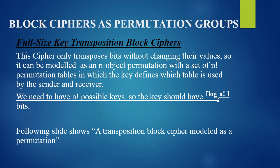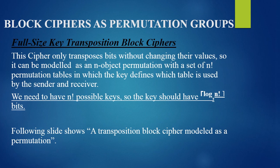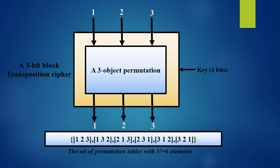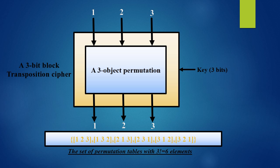The following figure shows that a transposition cipher can be modeled as a permutation. In this example, we have a 3-bit input. When this 3-bit input is fed into a 3-bit block transposition cipher, the output is any of the possible permutations of those 3 bits — that is, 3-factorial, or 6, possible outputs. The set of permutation tables with 3-factorial equal to 6 elements shows that a transposition cipher is nothing but a permutation.